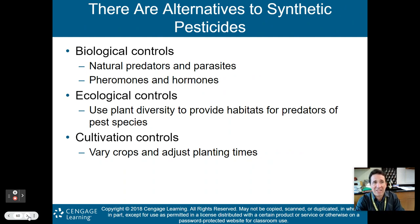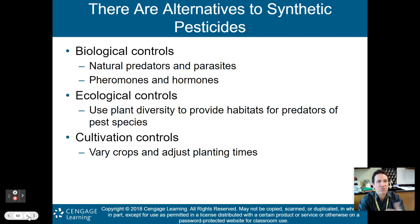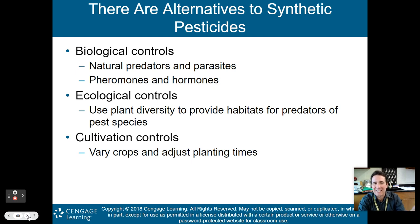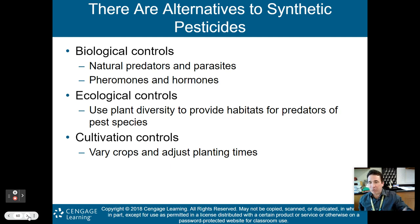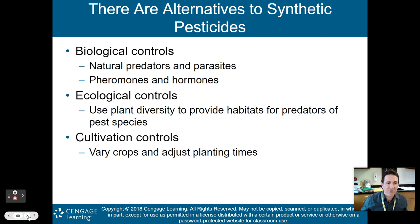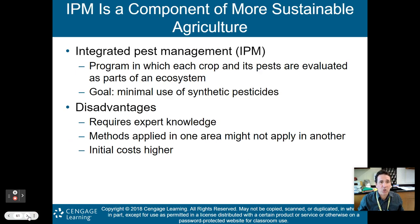Alternatives to synthetic pesticides include biological controls — natural predators and parasites, along with pheromones and hormones to control pests. You have ecological controls, using plant diversity to provide habitats for predators of pest species. This is another reason monoculture is a disaster — you only have one type of plant and can't support predators of pest species. With polyculture, you have different types of plants growing in the same area with different niches, allowing different organisms to thrive, some of which may be predators of your pest species. There are also cultivation controls — varying crops and adjusting planting times to avoid pests.